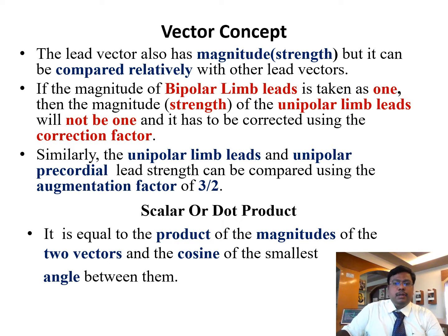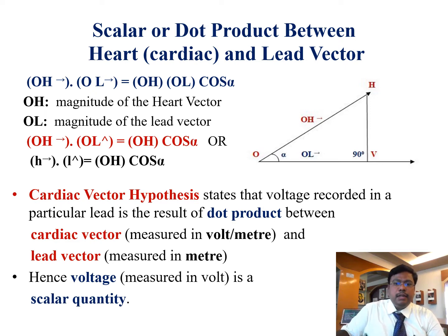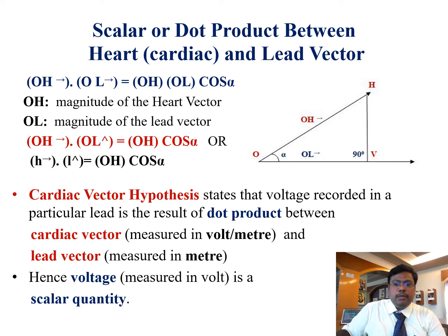The unipolar limb strength is not one and can be corrected using the correction factor. Similarly, unipolar limb and unipolar precordial lead strengths can be compared using the augmentation factor. Scalar dot product equals the product of the magnitudes of two vectors and the cosine of the smallest angle between them. Applying scalar dot product to ECG: H·L vector equals OH times OL times cos alpha. If the magnitude of OL is taken as one, we get H dot L equals OH cos alpha — that is, the H vector dot the L unit vector equals OH cos alpha.